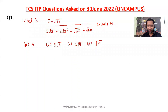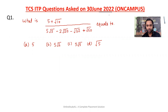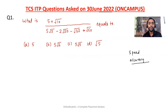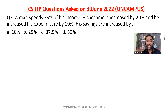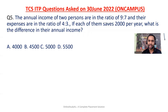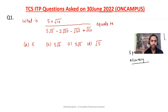Hello everyone and welcome to Online Study For You, a complete placement solution. Today's video is very important because I am going to solve TCS ITP aptitude questions which were asked on 30th of June 2022 in an on-campus exam. Speed and accuracy matter — you have to solve quickly and correctly. I will be discussing shortcut methods. My name is Pratik Srivastava and let us start with question number one.